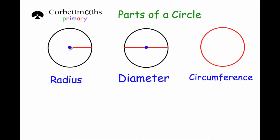Firstly, there's the radius. The radius is the line that joins the center of the circle to the edge of the circle. There's the diameter, that's the line across the circle that goes through the center. And finally, there's the circumference, and the circumference is just a fancy name for around the outside of the circle.